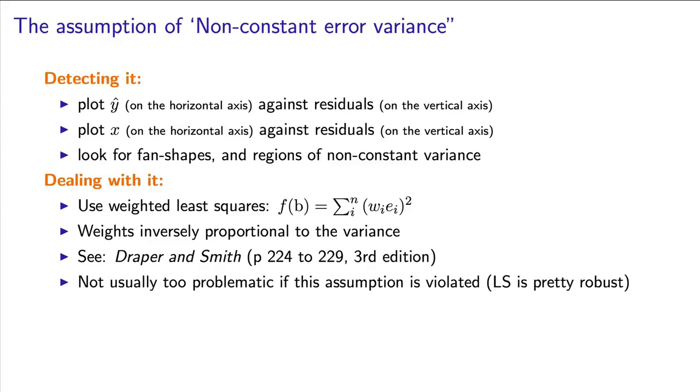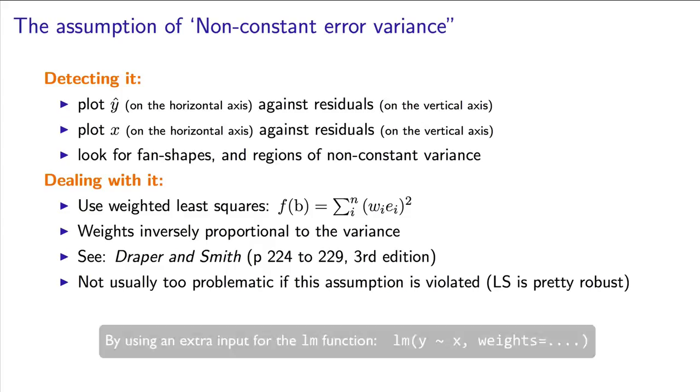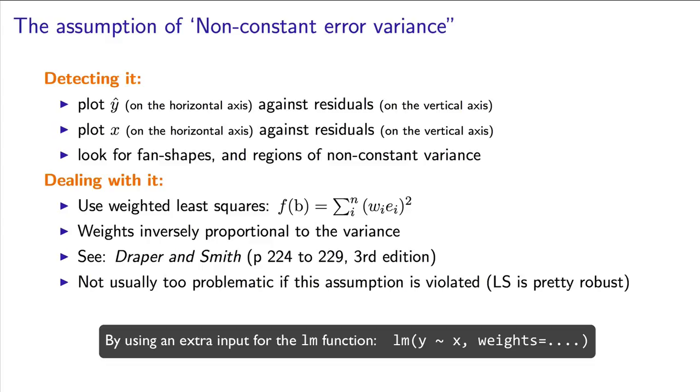A natural choice for the weights are those that are inversely proportional to the variance. Residuals with large variability will get smaller weights so that they don't allow those residuals to dominate the least squares objective function. And R has some tools built in that will do all this work for you.